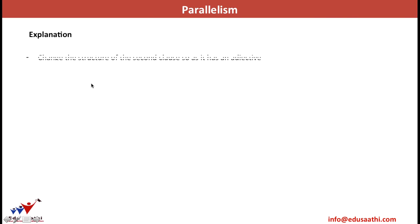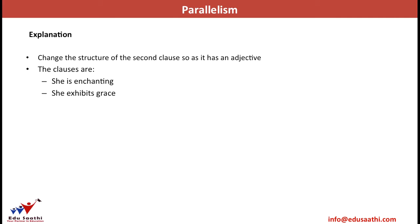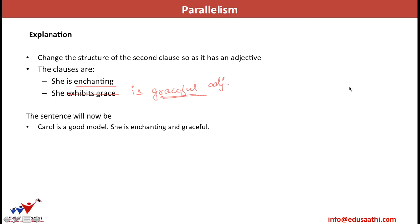To correct the sentence, I change the structure of the second clause to an adjective. Writing 'she exhibits grace' as 'she is graceful' — 'graceful' is an adjective, just like 'enchanting.' Both clauses are now in the same structure. Joining with 'and,' the correct sentence is: 'Carol is a good model. She is enchanting and graceful.' This structure is now correct.